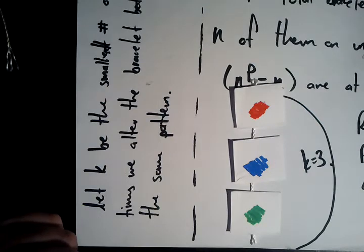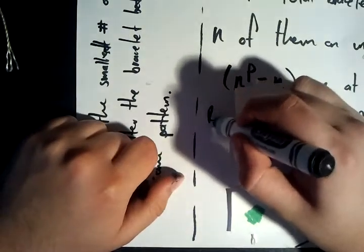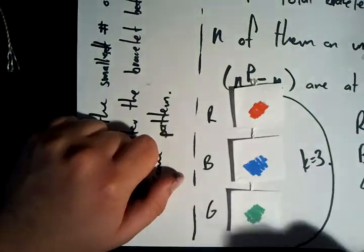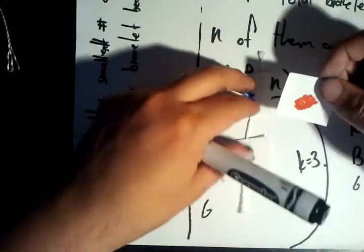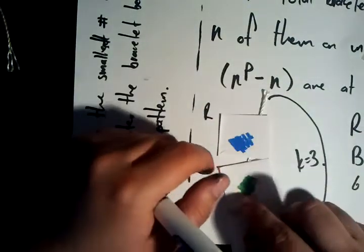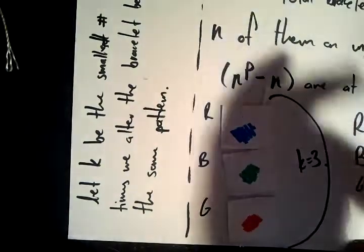Now, in the circular form, we can't distinguish order sometimes. So let's say we have red, blue, green, just like we do here. Now, in a string, that's different from, let's say, if we had blue, green, red. But in a bracelet, it's not different because we can just rotate it.